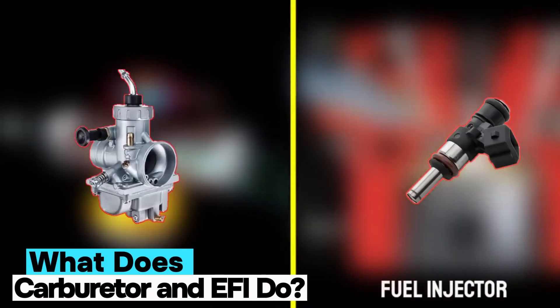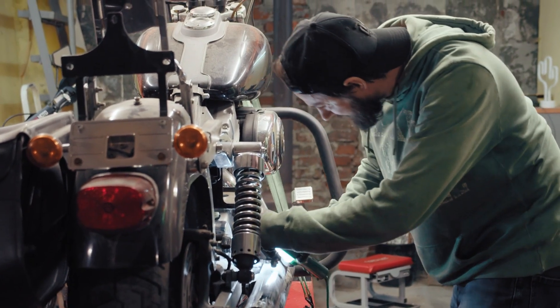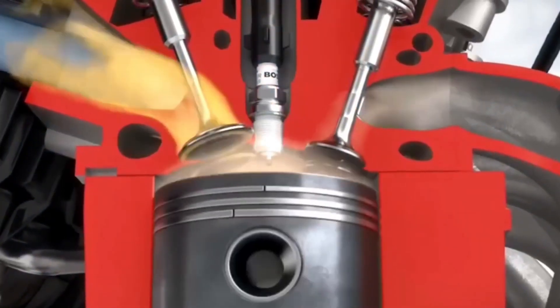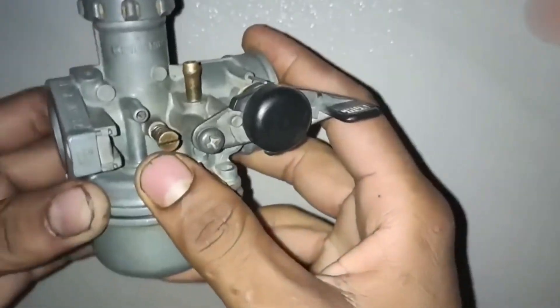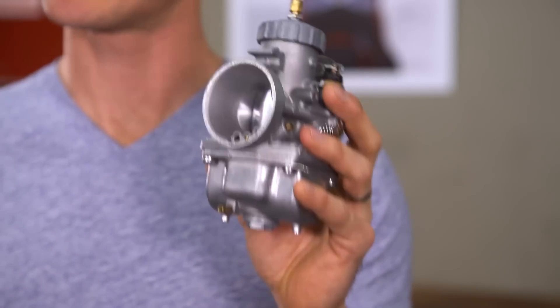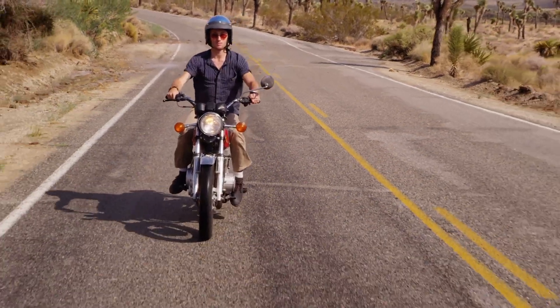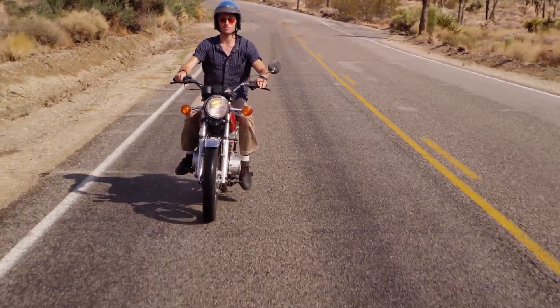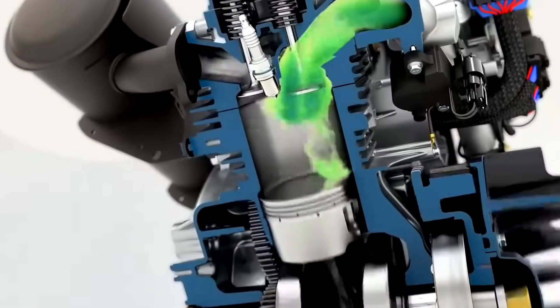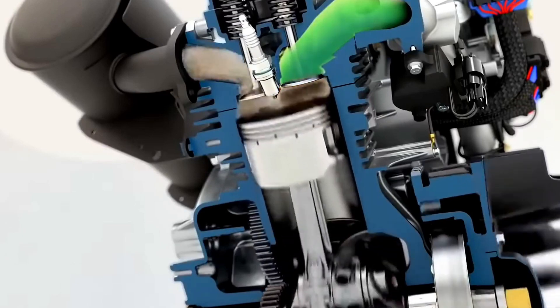What does carburetor and EFI do? At the core, both are like the chefs of your motorcycle's engine, tasked with cooking up the perfect air fuel mix for every ride. Same job title, wildly different personalities. The carburetor is an old school cook who eyeballs everything, doesn't follow recipes, but still somehow pulls it off most of the time. Fuel injection is your high tech sous chef with digital thermometers, precise timers, and a robot assistant.